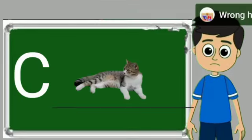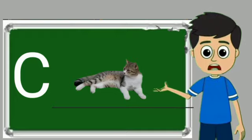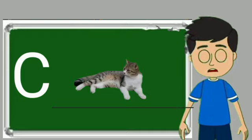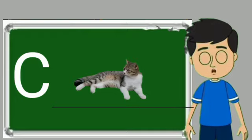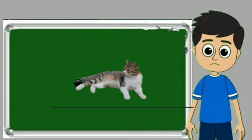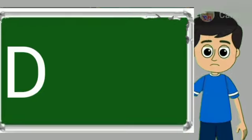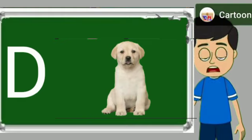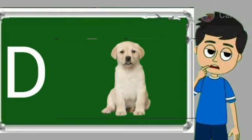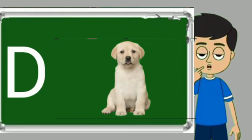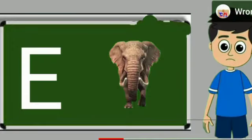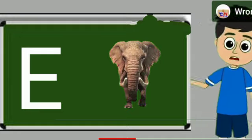C for cat. Cat means billy. D for dog. Dog means kutta. E for elephant.